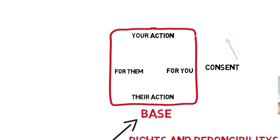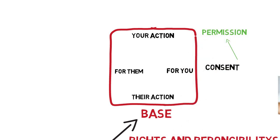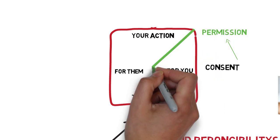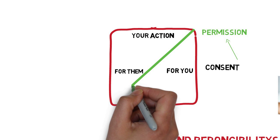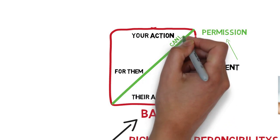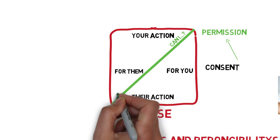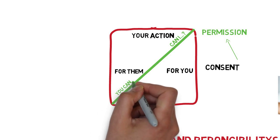One way of expressing consent is to ask for or give permission. This could be asking permission to do something for your own benefit — "Can I?" — you touch them for your own pleasure. Or you could give someone permission to do something for their benefit — you allow them to touch you because it gives them pleasure — "You can."